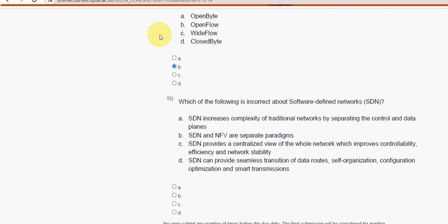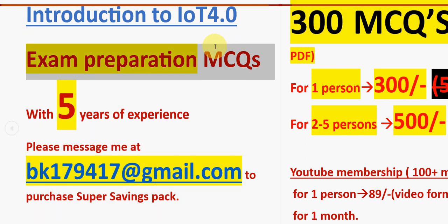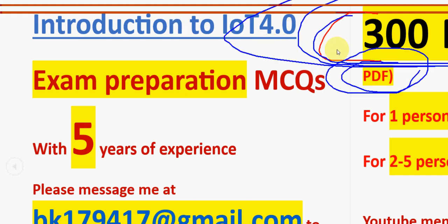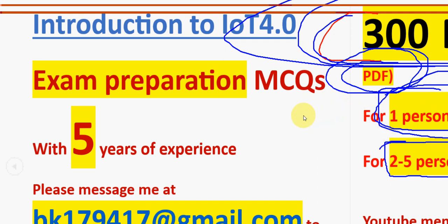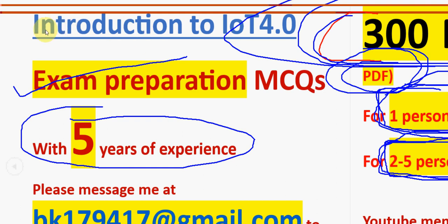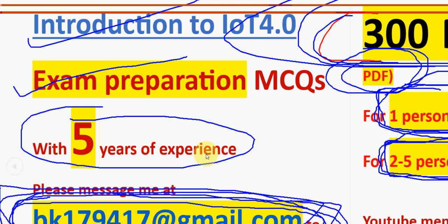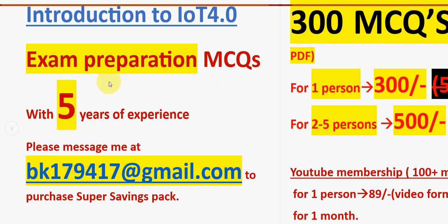Before the final question, a reminder: we have prepared 300 exam preparation MCQs for Introduction to IoT 4.1 and Industrial IoT, available as a Google Drive PDF. For one person it is 300 rupees; for two to five persons combined it is 500 rupees. Mail the provided email ID — bk179417 at gmail.com — to purchase. For other doubts, use the YouTube comment section.